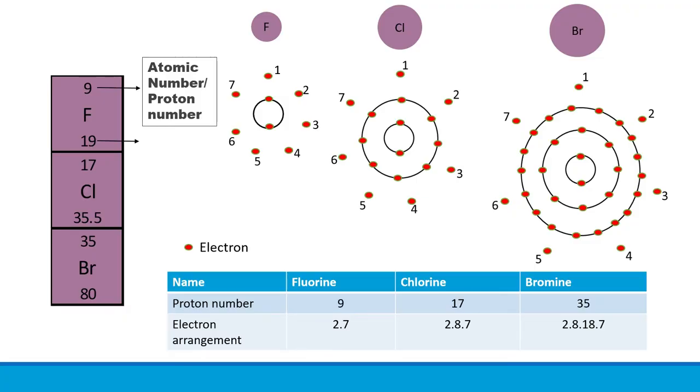Moving on, let's have a look at how electrons are arranged in halogen atoms. The table here has the proton and electron arrangement for fluorine, chlorine, and bromine. Notice that fluorine has proton number 9, meaning it has electron arrangement 2.7: two electrons in its inner shell while seven electrons in its outermost shell. Similarly, chlorine has proton number 17 and its electron arrangement is 2.8.7. Chlorine also has seven electrons in its outermost shell.